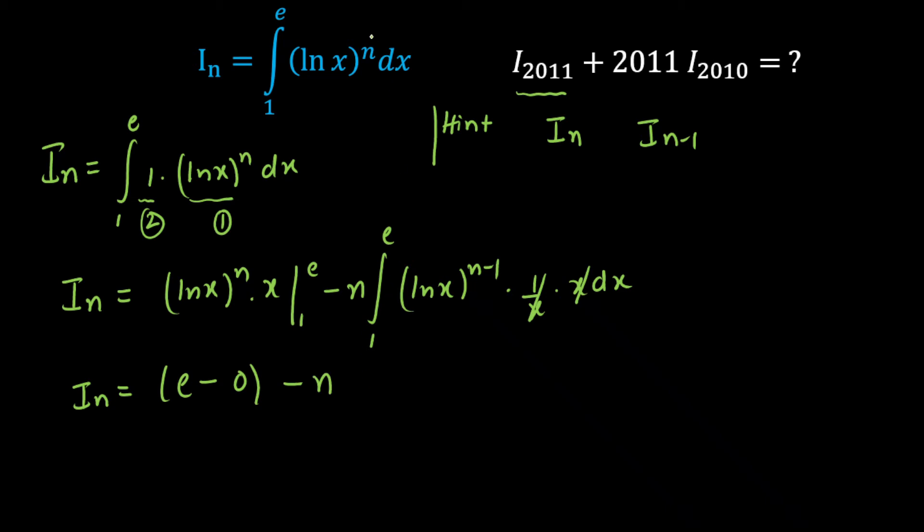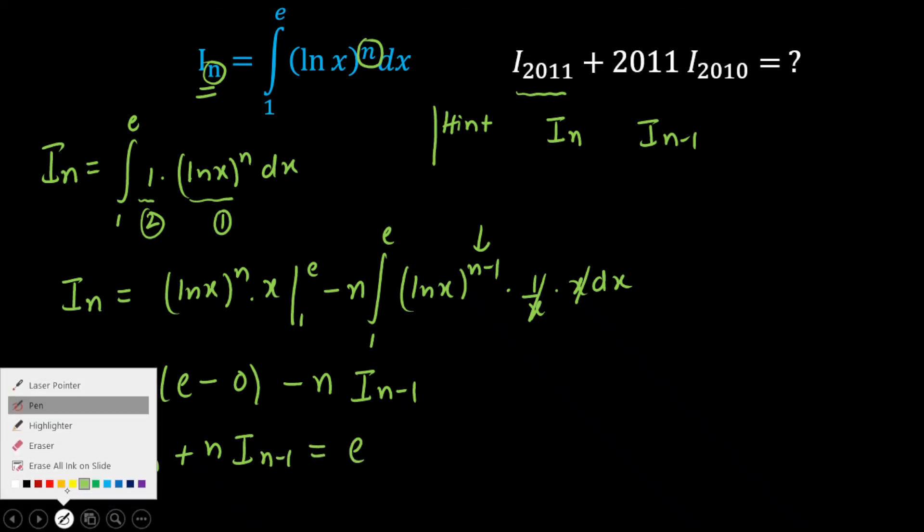Now if you observe one thing, for the original integral I of n, if the power is n here, then the integral will be I of n. So the index will be n here. Similarly, if the power is n minus 1 here, if you observe, the integral will be I of n minus 1. Now the moment you take minus times I of n minus 1 here on the other side, you will get this as a beautiful relation between I of n and I of n minus 1. And this will be always equal to e. So we got a beautiful relation here.